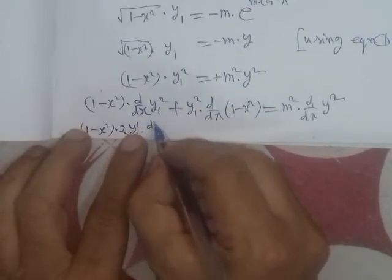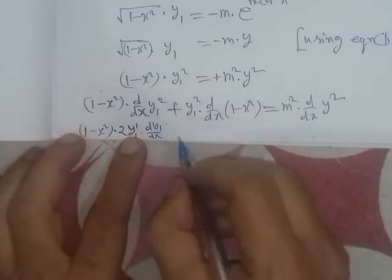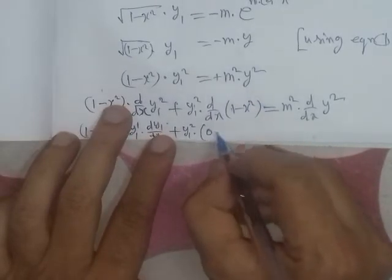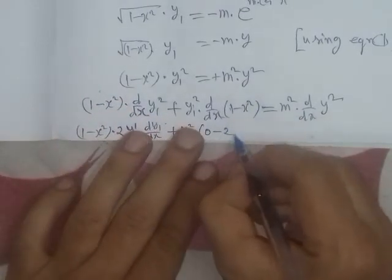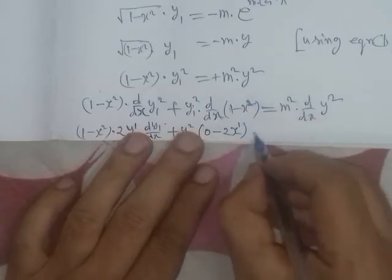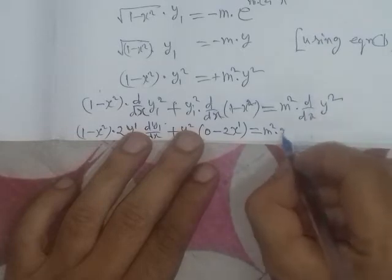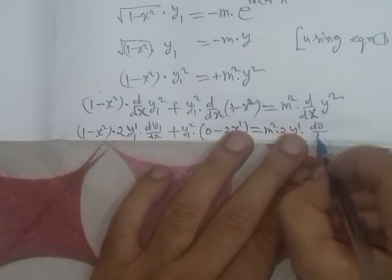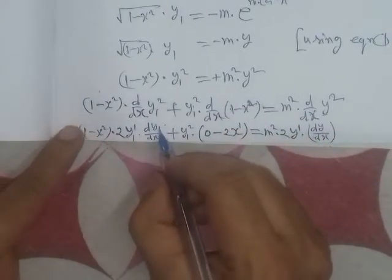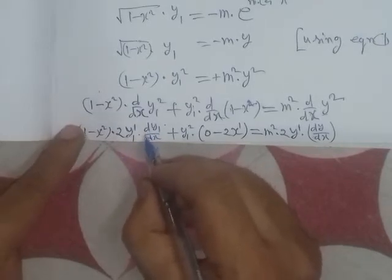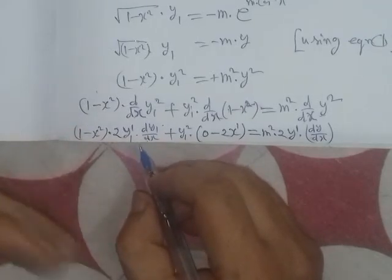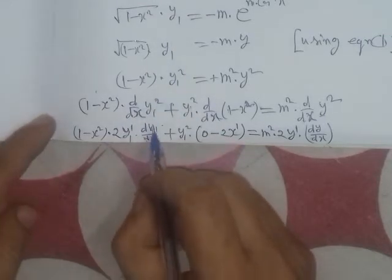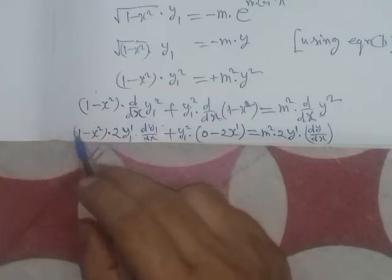We differentiate y₁² to get 2y₁ · dy₁/dx, which is 2y₁ · y₂. And d/dx(1 - x²) = −2x. So the equation becomes (1 - x²) · 2y₁ · y₂ + y₁² · (−2x) = 2m²y · y₁. Taking 2y₁ common from the left-hand side, we get 2y₁[(1 - x²) · y₂ − x · y₁] = 2m²y · y₁.